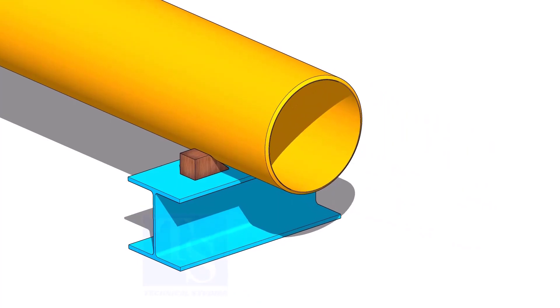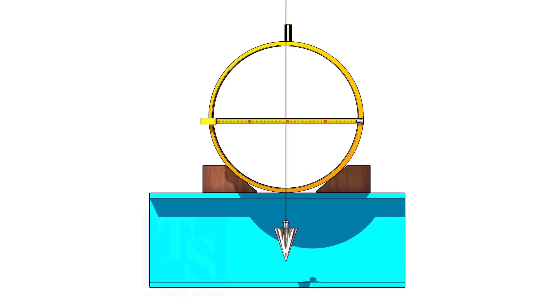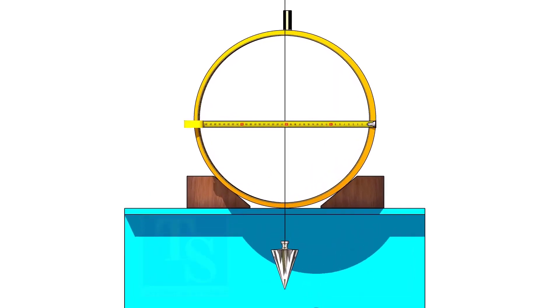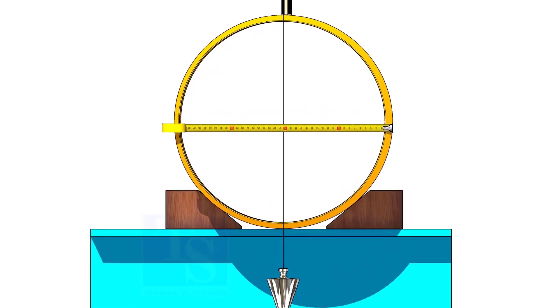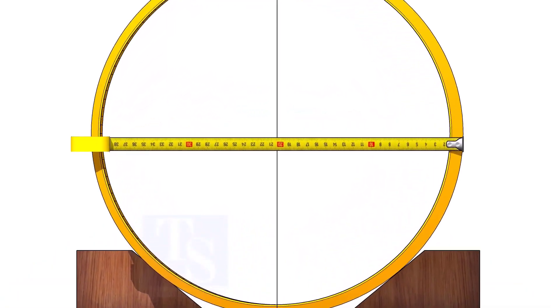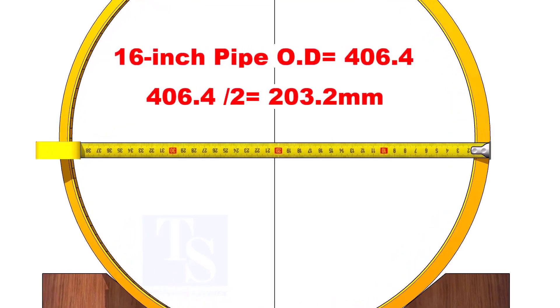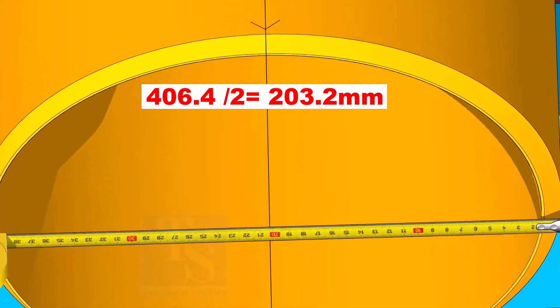Put a plumb at the center of the pipe. Adjust the plumb to the half diameter of the pipe. This is a 16-inch pipe. OD of a 16-inch pipe is 406.4 millimeters. Mark the point where the half OD 203.2 millimeters reaches.